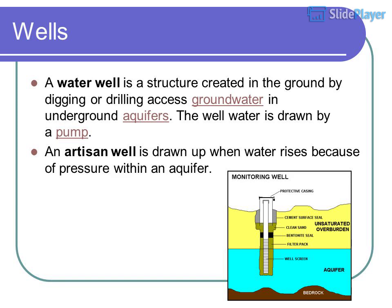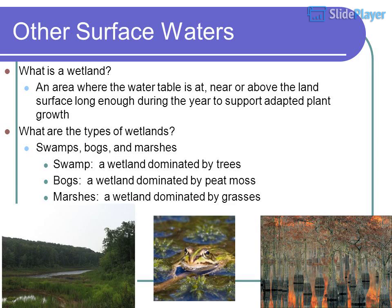Other surface waters — what is a wetland? An area where the water table is at, near, or above the land surface long enough during the year to support adapted plant growth. The types of wetlands include swamps, bogs, and marshes — a marsh being a wetland dominated by grasses.